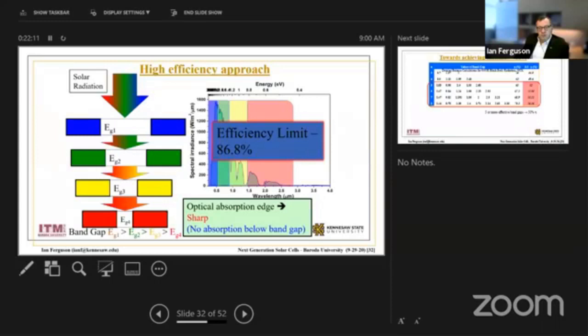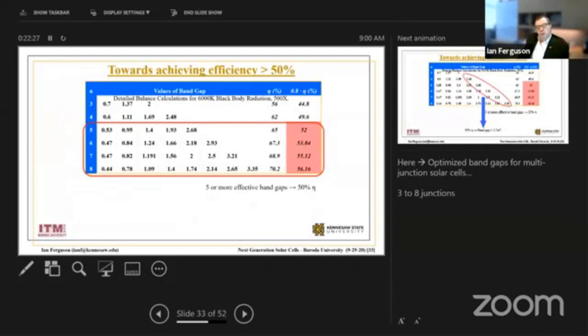And you never see more than about 80% of that theoretical limit in any device, so this is telling us we should be able to get up to devices of about 60-70% efficiency by using multiple junctions in the device.